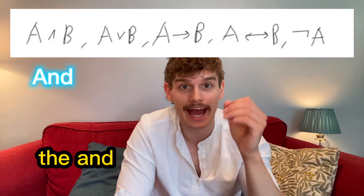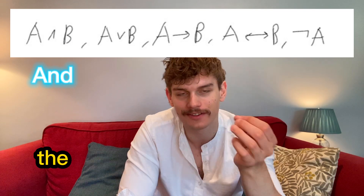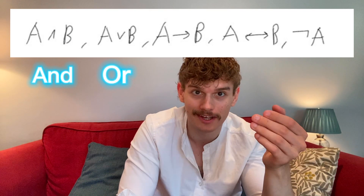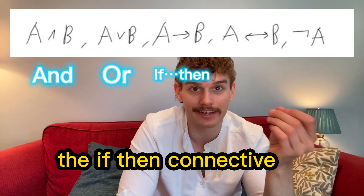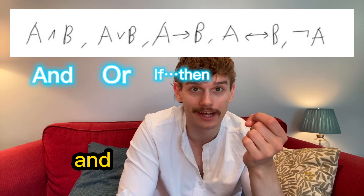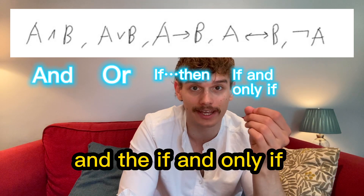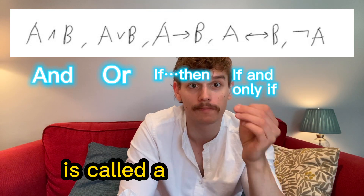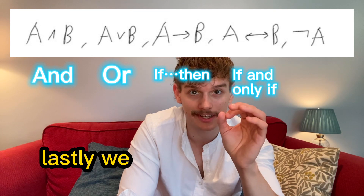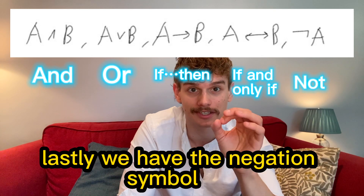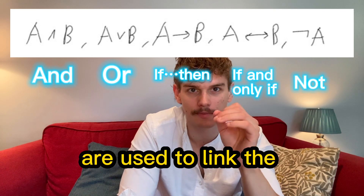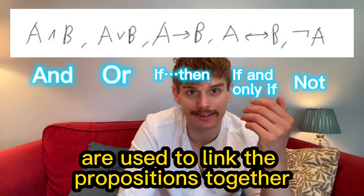The 'and' connective is called a conjunction, the 'or' connective is called a disjunction, the 'if-then' connective is called a conditional, and the 'if-and-only-if' connective is called a bi-conditional. Lastly, we have the negation symbol, 'not.' These connectives are used to link the propositions together.